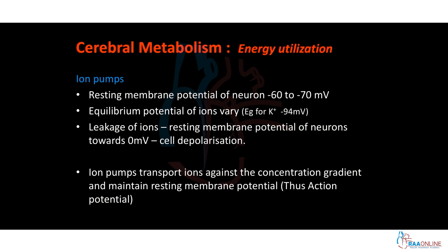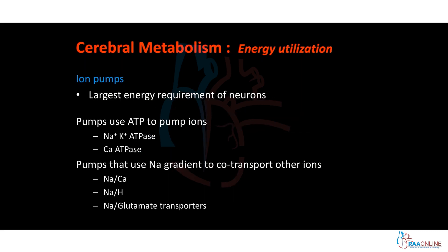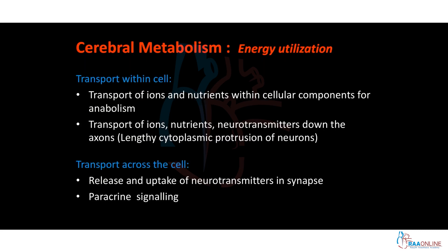This resting membrane potential is the basis for the generation of action potentials, and these ion pumps play a vital role in neuronal function. Because of active transport, these ion pumps consume lots of energy. Pumps like sodium-potassium ATPase and calcium ATPase directly utilize energy from ATPs. Pumps like sodium-calcium, sodium-hydrogen, or sodium-glutamate transporters indirectly consume energy by using the sodium gradient and co-transporting other ions. So the transport of ions and nutrients is a major energy-consuming process.